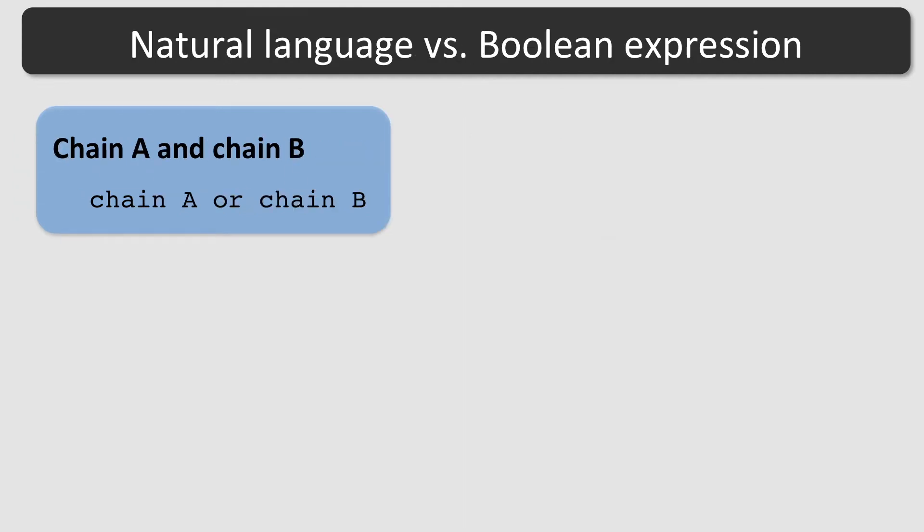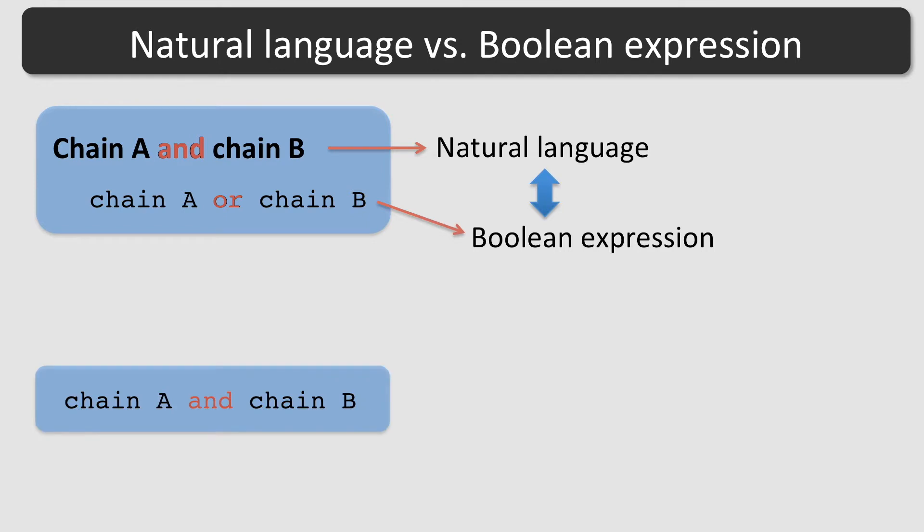The last example showed that a Boolean expression can be different compared to natural language. To say that we select both chain A and chain B, we use the word AND in natural language. However, the corresponding Boolean expression uses the operator OR. The expression chain A and chain B will yield an empty selection, because there is no atom that can satisfy these two conditions simultaneously. Keep this in mind when combining expressions.